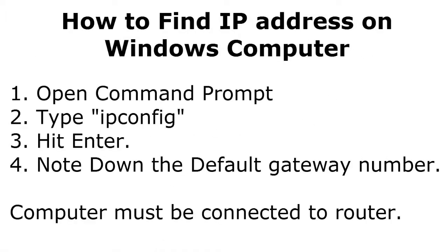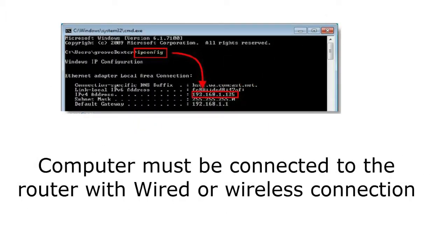So first we will check the IP address of the Linksys router. On a Windows computer, open Command Prompt and type IPCONFIG, then hit Enter. You will see information displayed — note down the Default Gateway number. The Default Gateway number is the IP address of your router. As shown in the figure, the Default Gateway is 192.168.1.1. Your computer must be connected to the router.